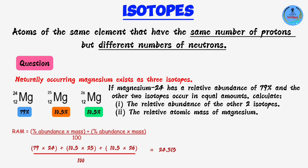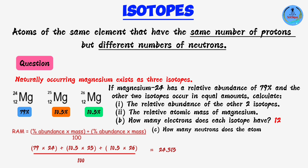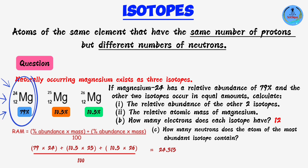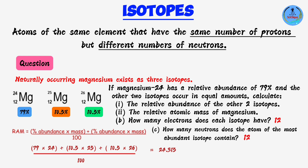As a follow-up: all magnesium isotopes contain 12 electrons, since they all have the same number of protons (12) and the number of electrons equals the number of protons. For the most abundant isotope, magnesium-24, the number of neutrons is 24 minus 12, which equals 12 neutrons.